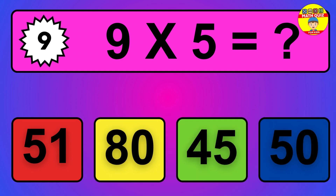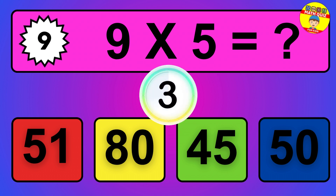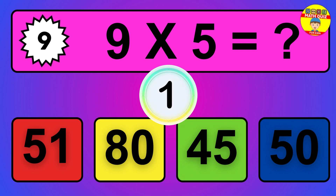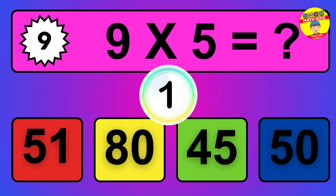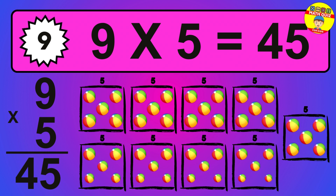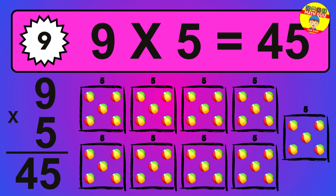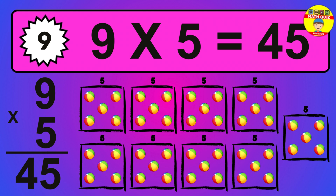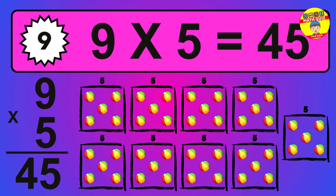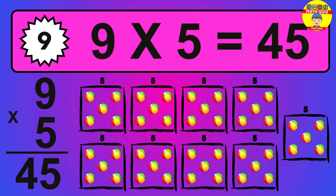Question 9. 9 times 5 equals what? So the answer is 9 times 5 is 45. To calculate, we have 9 groups with 5 balls each one. So how many balls do we have? 45 balls.